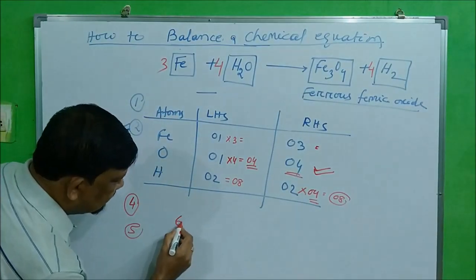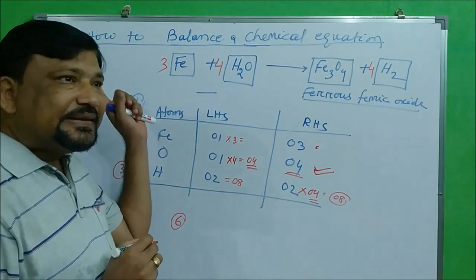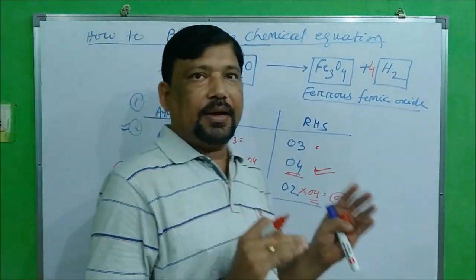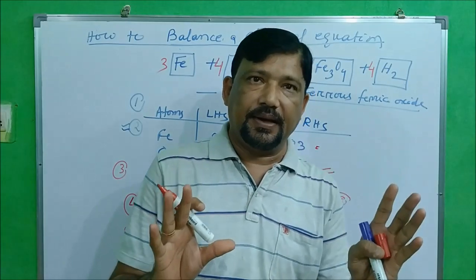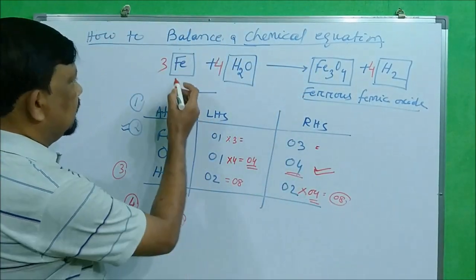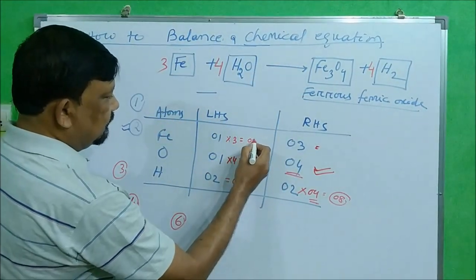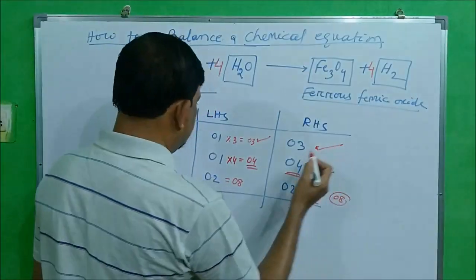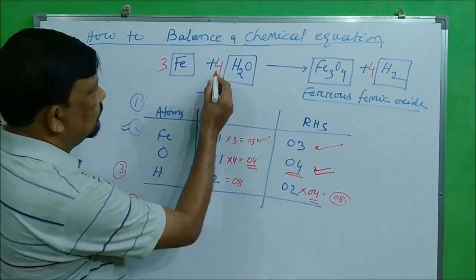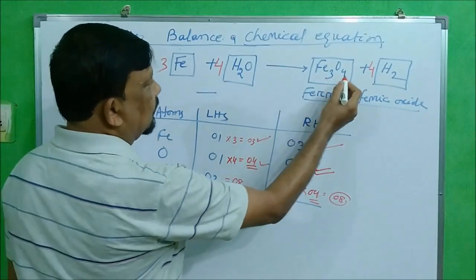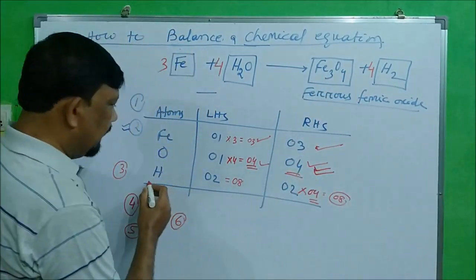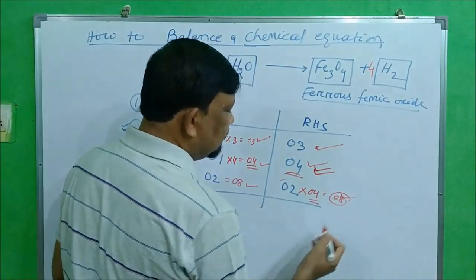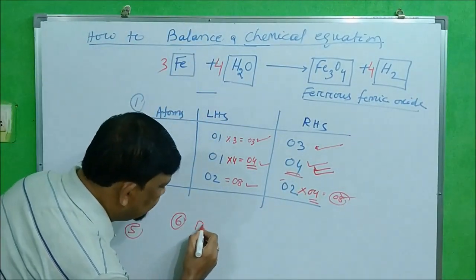Step 6: Check whether all atoms are balanced. Fe: LHS = 3, RHS = 3 — OK. Oxygen: LHS = 4, RHS = 4 — OK. Hydrogen: LHS = 8, RHS = 8 — OK. This equation is now a balanced equation.